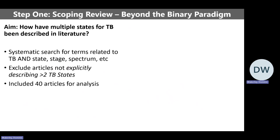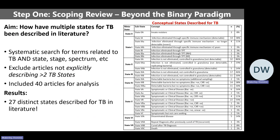The first step was a scoping review. Our aim was to see how TB has been described as a multi-stage disease in the literature. We did a systematic search for terms related to TB stage, spectrum, framework, and classification, excluding articles that weren't explicitly describing TB as a multistage disease. We included 40 articles in the final analysis. The finding — perhaps unsurprisingly — is that TB is not just binary; there are actually 27 distinct stages for TB described in the literature.